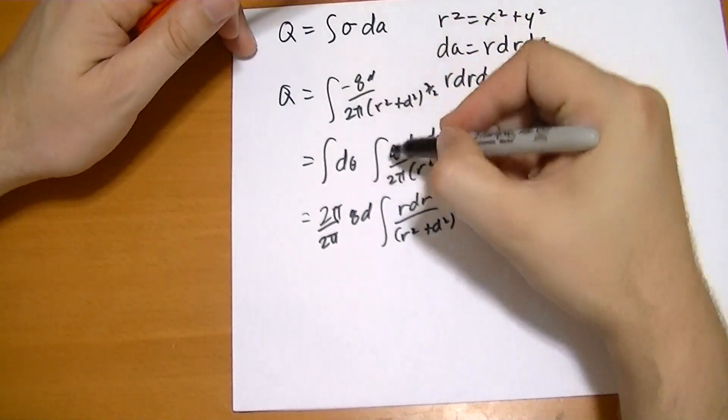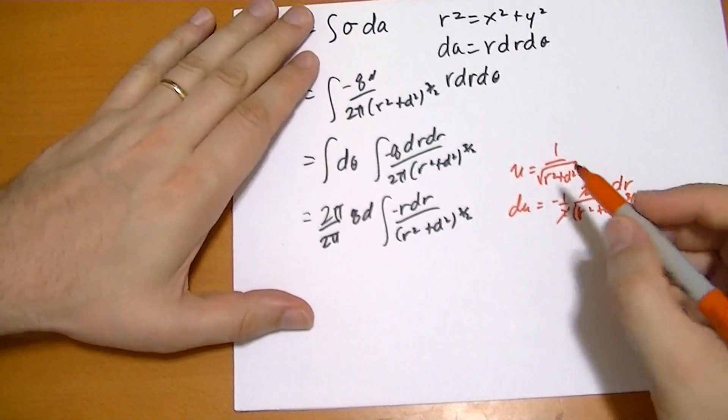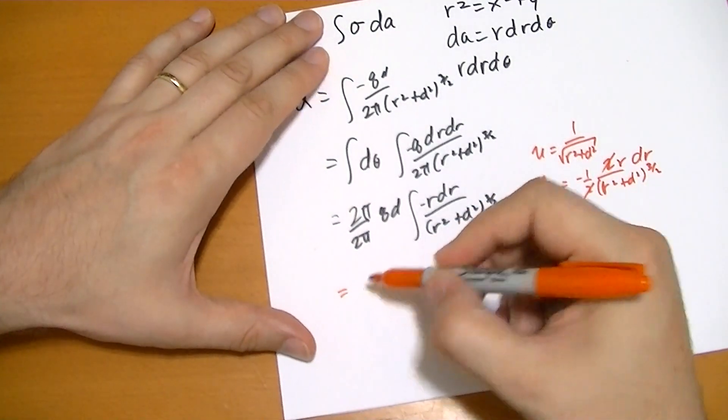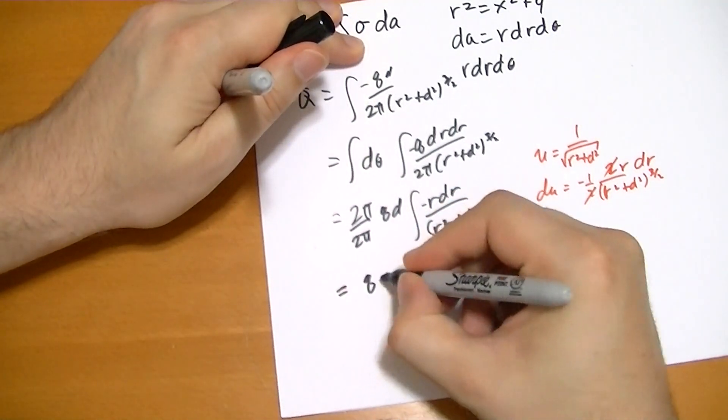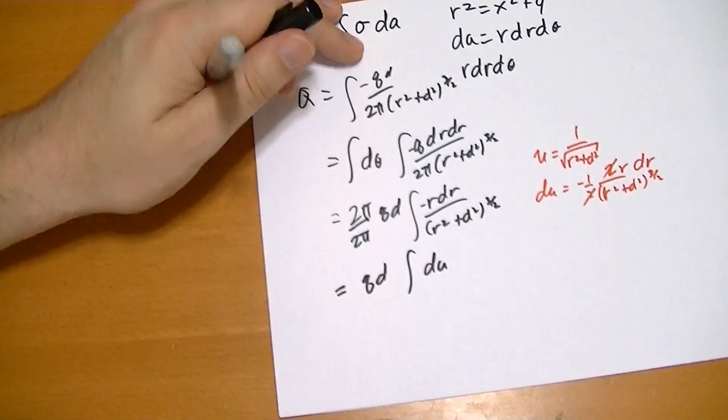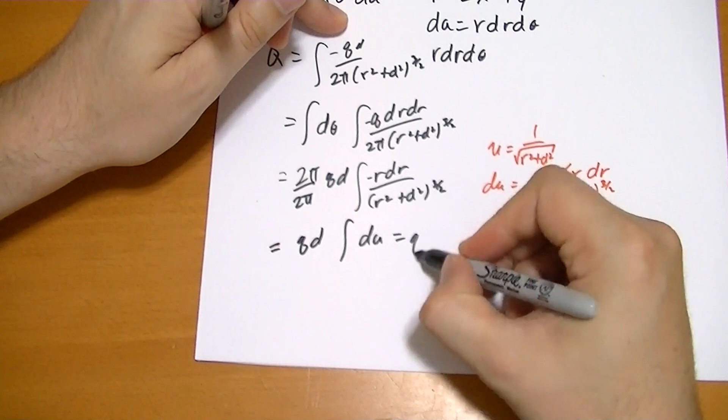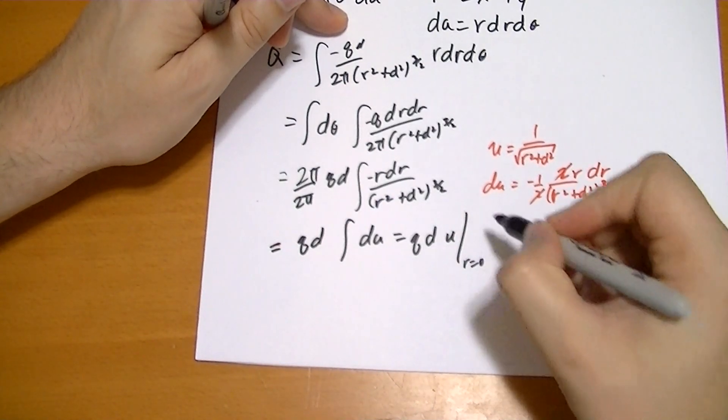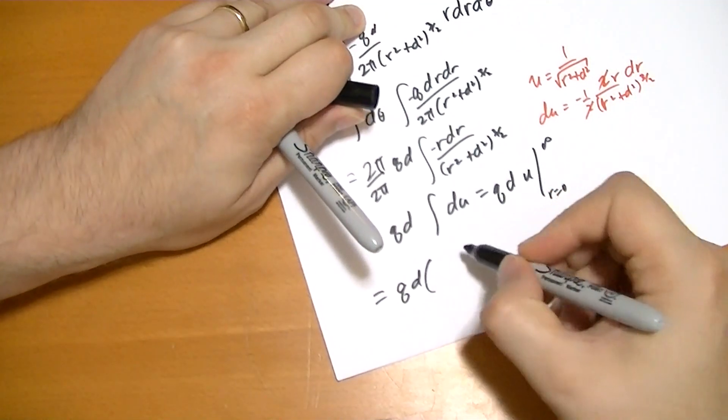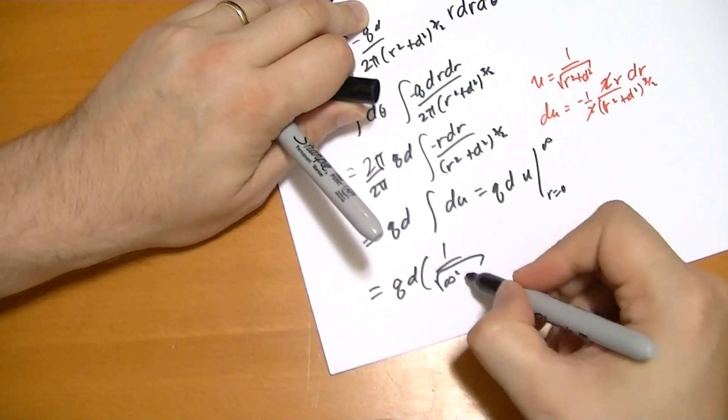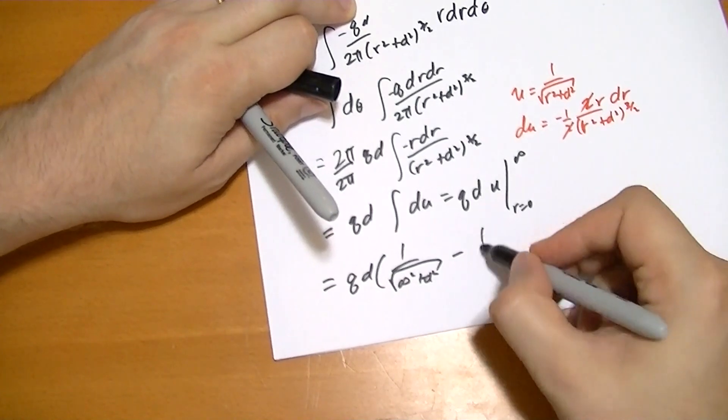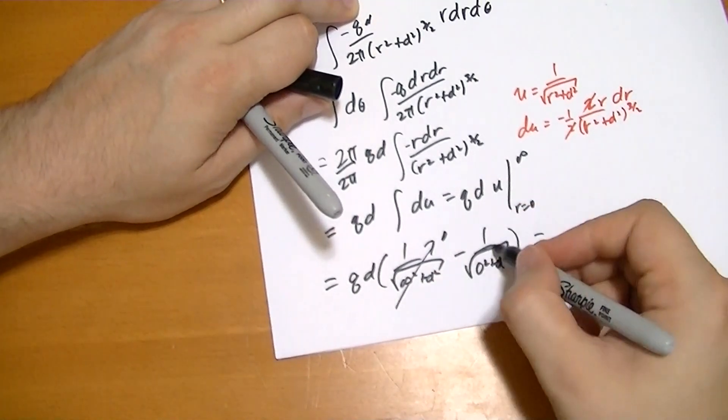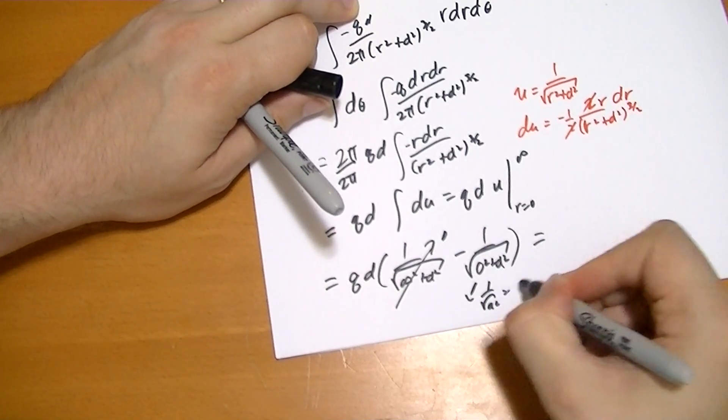So it is negative. Our du equals minus r dr over r squared plus d squared to the 3 halves. So we get equals to qd the integral of du. Isn't that beautiful? And that becomes equal to qd, well, the integral of du is just u evaluated between what we're going from r equals 0 to infinity. So we get qd of 1 over square root of infinity squared plus d squared minus 1 over the square root of 0 squared plus d squared. As you can see, this one's going to go to 0, and this one's going to go to 1 over square root of d squared equals 1 over d.